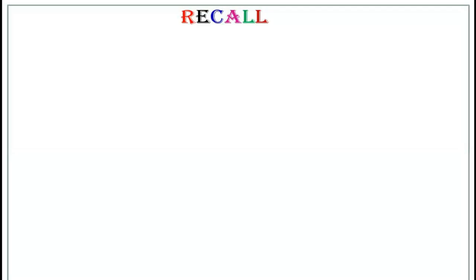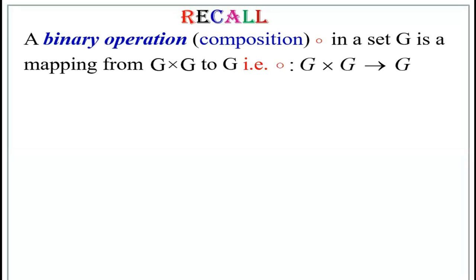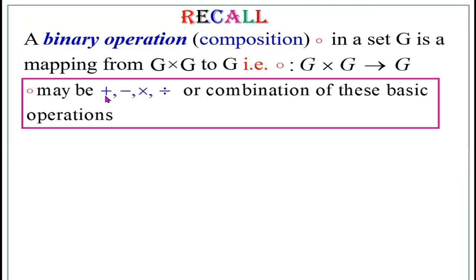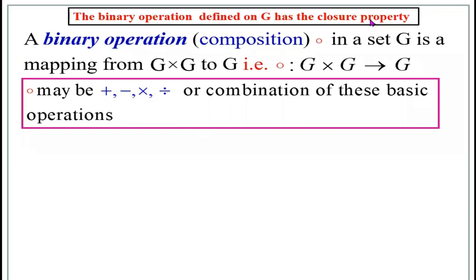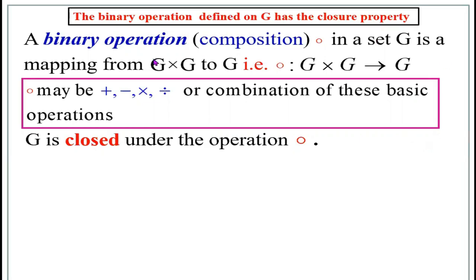We will recall what we have learned in the previous classes. A binary operation, or composition circle, in a non-empty set G is a mapping — that is, a function — from G cross G to G. If circle is a function from G cross G to G, then this function circle is called a binary operation on G. The circle may be addition, subtraction, multiplication, division, or a combination of these basic operations. The binary operation defined on G has the closure property; therefore we say that the set G is closed under the binary operation circle.